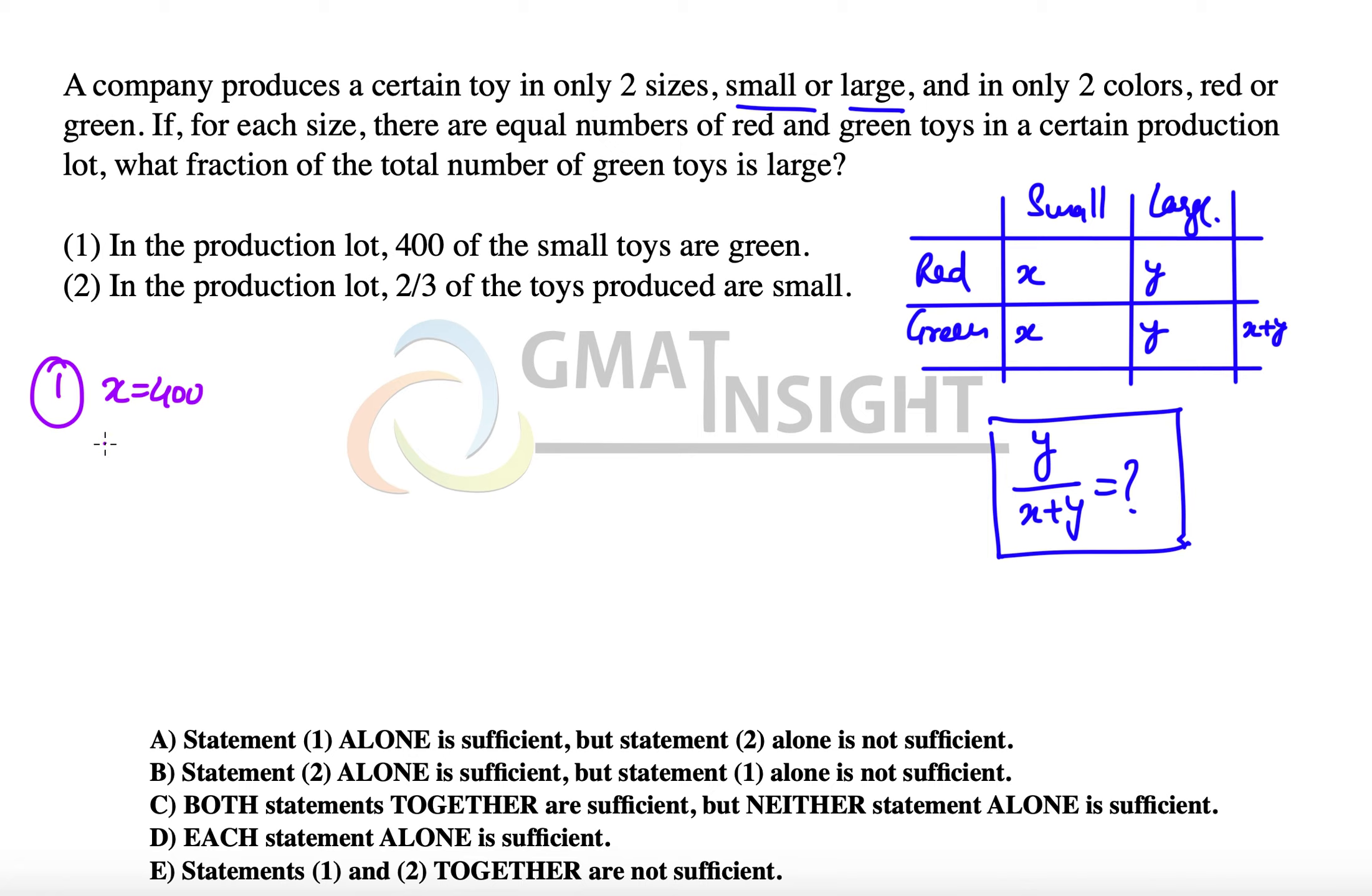but we do not know the value of y and we do not know the value of x plus y. Therefore, the first statement alone is not sufficient to answer the question, and options A and D are out.